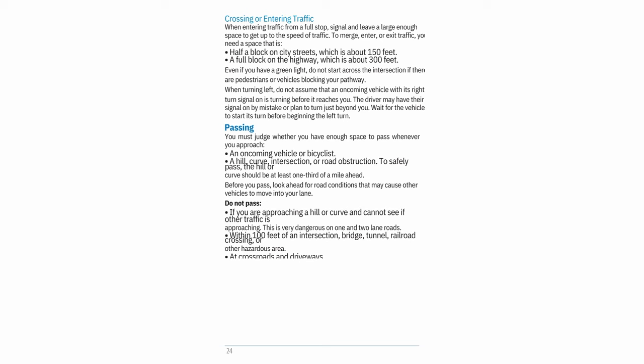Passing: You must judge whether you have enough space to pass whenever you approach an oncoming vehicle or bicyclist, or a hill, curve, intersection, or road obstruction. To safely pass, the hill or curve should be at least one-third of a mile ahead. Before you pass, look ahead for road conditions that may cause other vehicles to move into your lane.